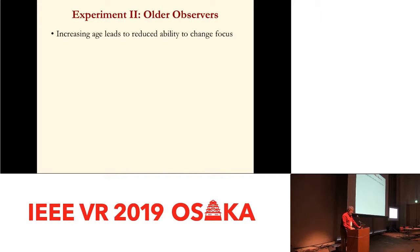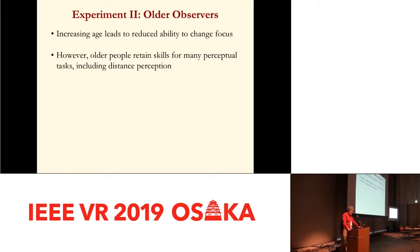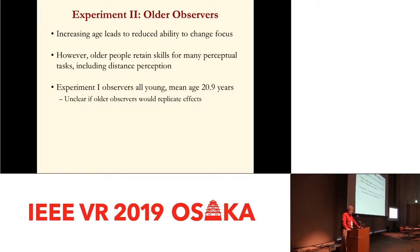It is well known that increasing age leads to a reduced ability to change focus, because the lens in the eye becomes stiff — the reason middle-aged people begin to need reading glasses. Despite this, skill for many perceptual tasks, including those related to distance perception, is quite well preserved with increasing age. All observers in experiment one were young, averaging about 21 years, and therefore suffered no age-related reductions in focus ability, although we did not measure this specifically.